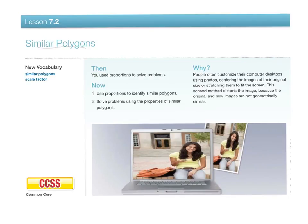Okay, similar polygons, 7.2. Two new words that we've got: similar polygons and scale factor. The scale factor is the one that we're going to concentrate on later on in this exercise.